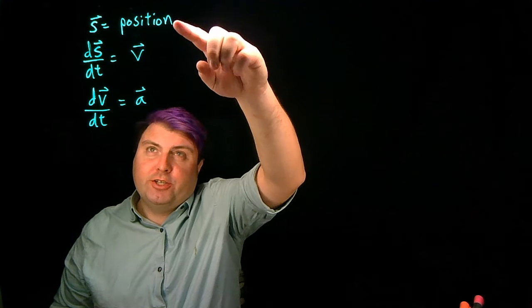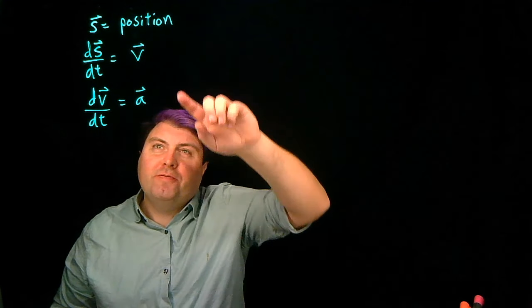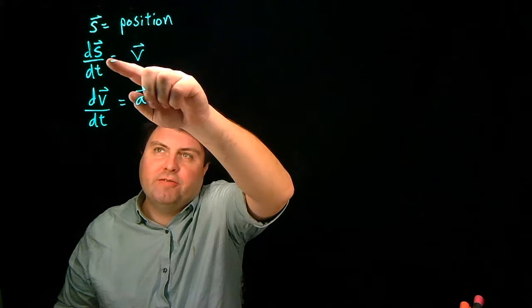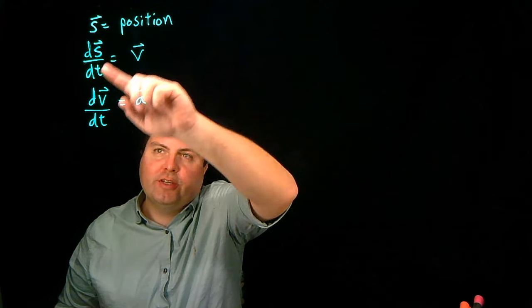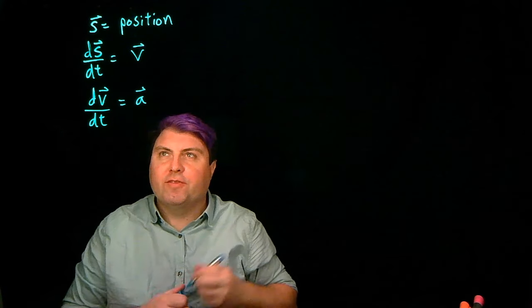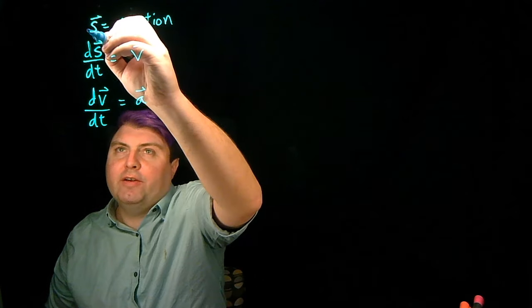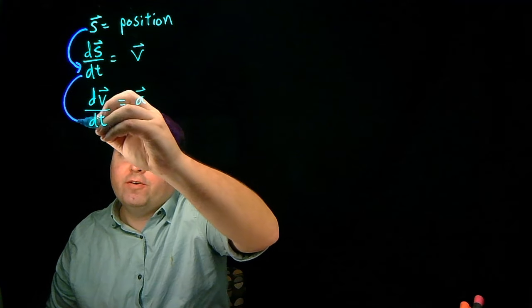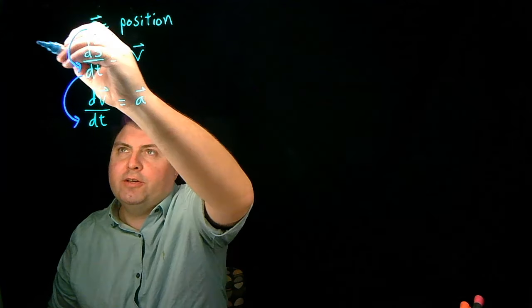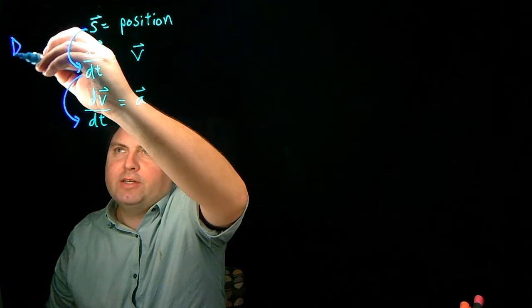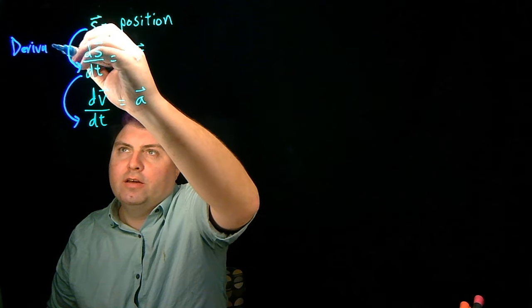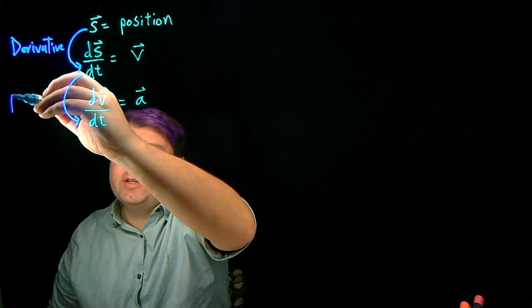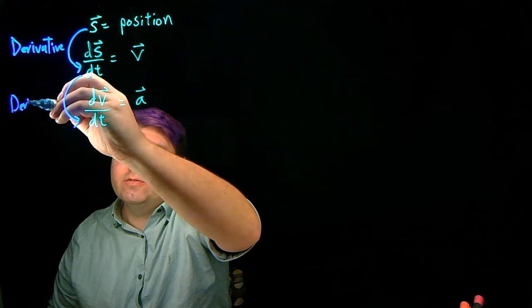We've just defined our position, and then we've defined our velocity and acceleration as the derivatives of the position, and then derivatives of the velocity. So we can go from position to velocity, and from velocity to acceleration, by taking a derivative each time.